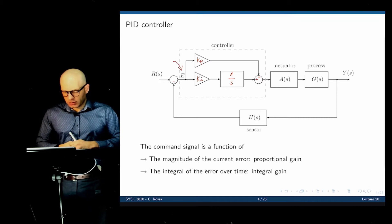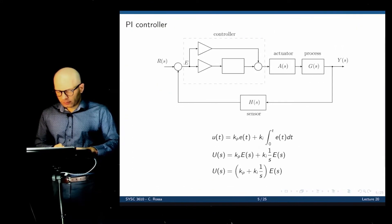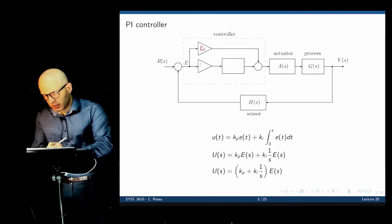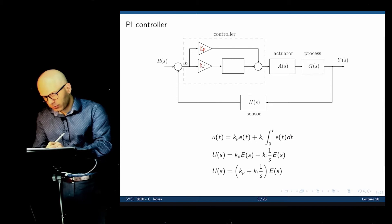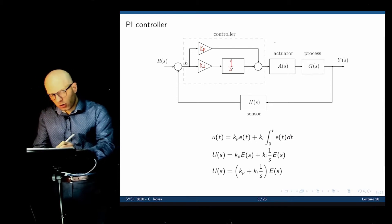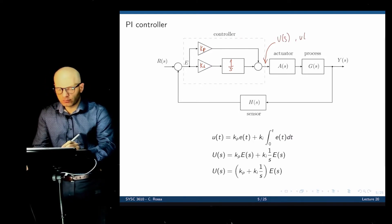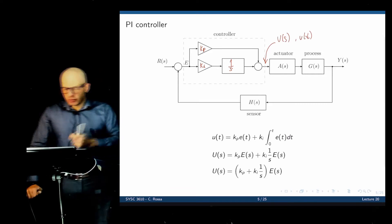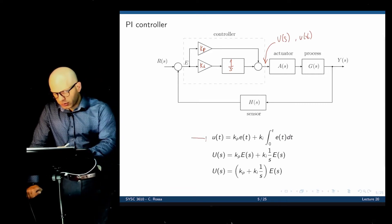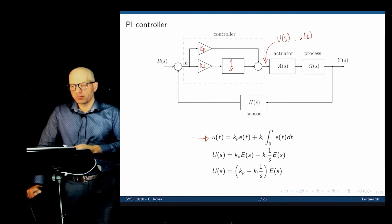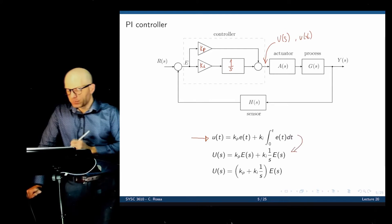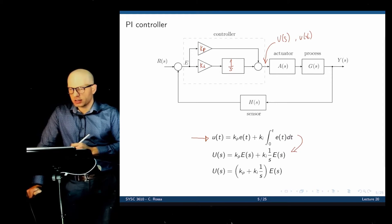Now we introduce the integral controller. We take the error and multiply it by 1/s (equivalent to integration), then multiply by KI, the integral gain. We add this to the proportional term and send the sum to the plant. So the signal the plant receives is proportional to the error itself and also proportional to the integral of the error over time. In the Laplace domain: U(s) = KP·E(s) + (KI/s)·E(s).